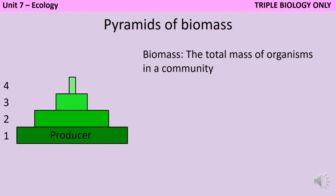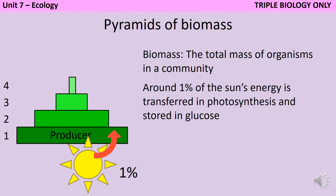Producers transfer energy from the Sun in the form of light, and they can then store this energy in glucose, which can be used later for respiration. Around 1% of the Sun's energy is absorbed by plants using their chlorophyll and then stored in glucose as part of photosynthesis.